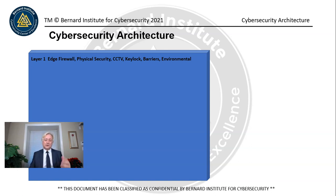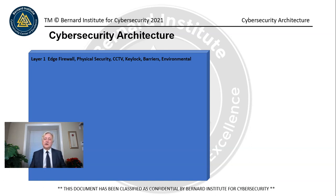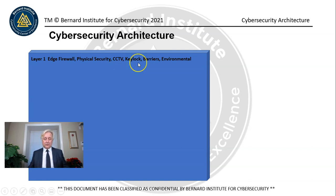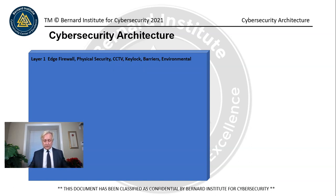Layer 1 is the edge firewall. Every infrastructure, every system, every network should be two firewalls away from the Internet. On the first firewall, called the edge firewall, a number of things happen. We have physical security, CCTV — closed-circuit television — key locks, physical barriers, and environmental controls.